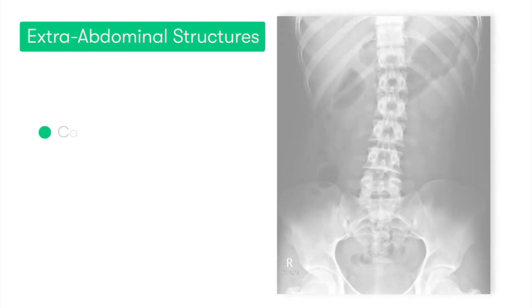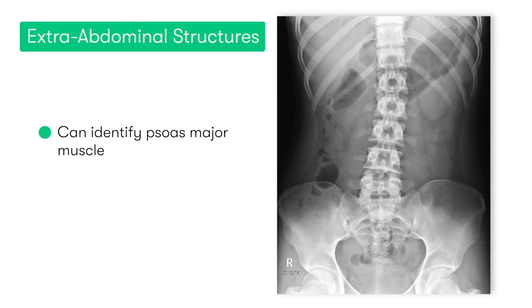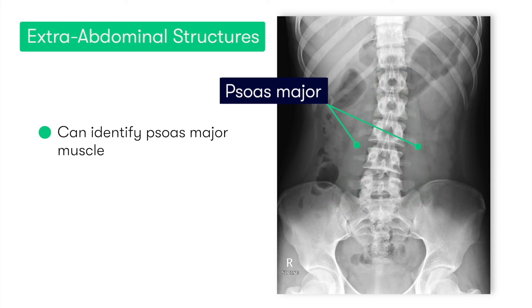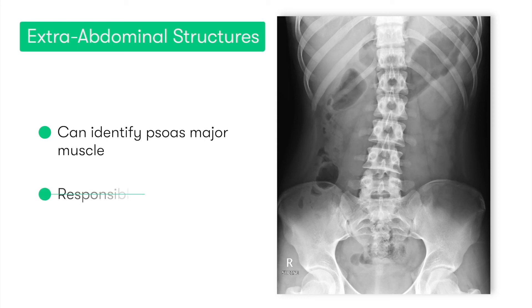The main muscle that we can aim to identify in our abdominal x-rays is the psoas major muscle, which is a posterior abdominal muscle extending from the lumbar vertebrae down to the lesser trochanter of the femur, and is responsible for flexion of the hip.